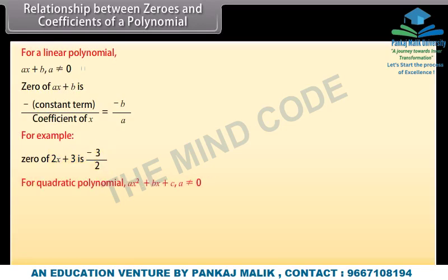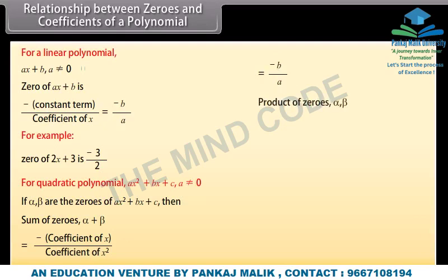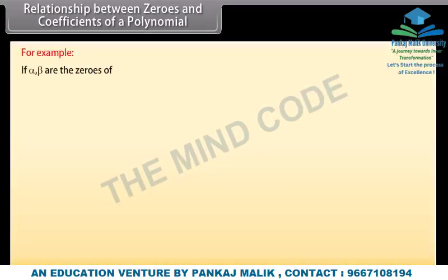For the quadratic polynomial ax squared plus bx plus c, where a is not equal to 0, if alpha and beta are the zeros, then sum of zeros alpha plus beta equals minus coefficient of x upon coefficient of x squared, which equals minus b upon a. Product of zeros alpha·beta equals constant term upon coefficient of x squared, which equals c upon a. For example, if alpha and beta are the zeros of 2x squared plus 3x plus 2, then alpha plus beta equals minus 3 upon 2, and alpha·beta equals 2 upon 2 which equals 1.